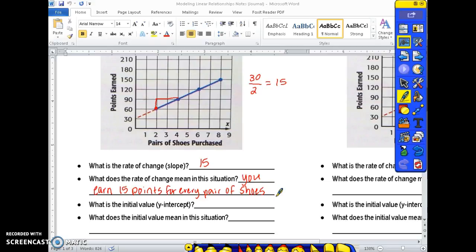What is the initial value or the y-intercept? So where this graph crosses the y-axis if we extend the graph it's going to be 30. Remember your y-intercept is where the graph crosses or intercepts the y-axis. If we intercept the y-axis at 30 then for this situation that means that before you buy any pairs of shoes just signing up for this club you earn 30 points for signing up. So for this graph you get 30 points to sign up and then they add 15 points every time you purchase a pair of shoes.